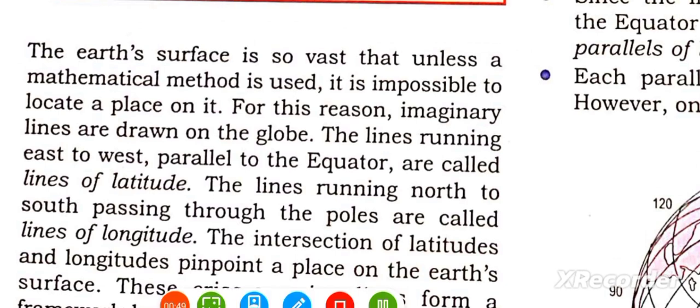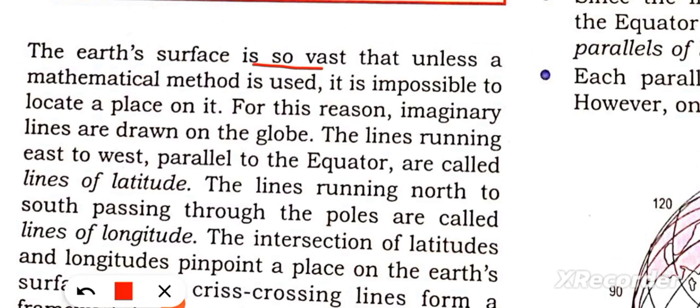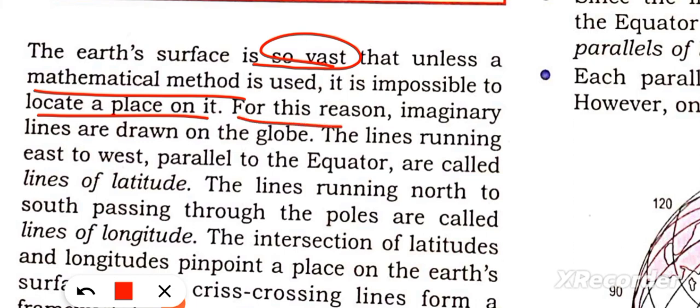You all know that our Earth's surface is very big. Until we use a mathematical method to locate any place, it doesn't happen. The Earth's surface is very big and we need some method to locate any place. This is the reason we have made imaginary lines on the globe.